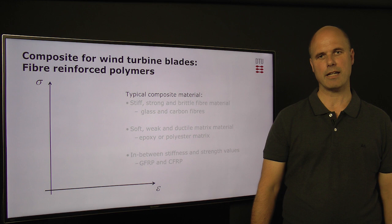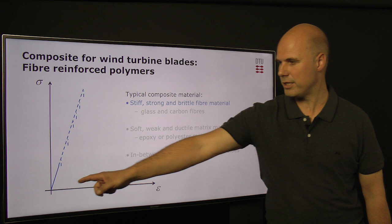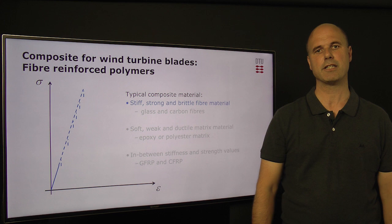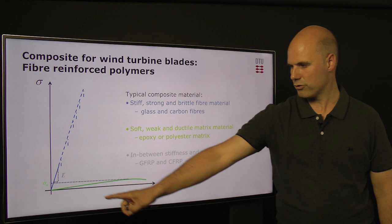Composites consist of two material phases: a brittle material and a soft, ductile material. The brittle phase is stiff and strong, but also exhibits very brittle behavior as shown on the tensile curve here — stresses are rather unpredictable and given by the biggest flaw in the material. On the other hand, the soft phase, which is the matrix material, is weak and ductile, as illustrated on the green curve.